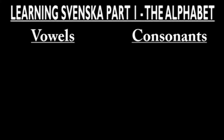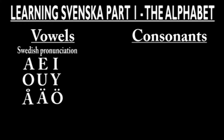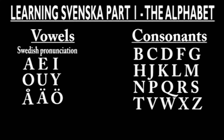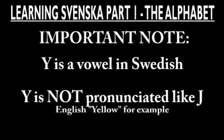There are 9 vowels, which are A, E, I, O, U, Å, Ö, and the rest are consonants. Note that Y is considered a vowel and therefore doesn't have the same pronunciation in Swedish as J does in English.